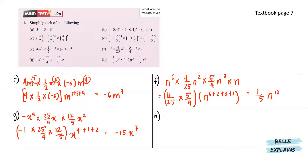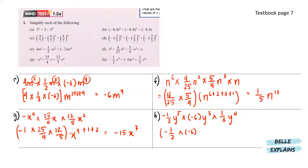And lastly for h, we have negative 1 over 2 times y to the power of 5 times negative 6y to the power of 3 times 1 over 3y to the power of 4. Getting the numbers to one side, we have negative 1 over 2 times negative 6 times 1 over 3, then y to the power of 5 plus 3 plus 4. So that gives us 1 times y to the power of 12, which is y to the power of 12.